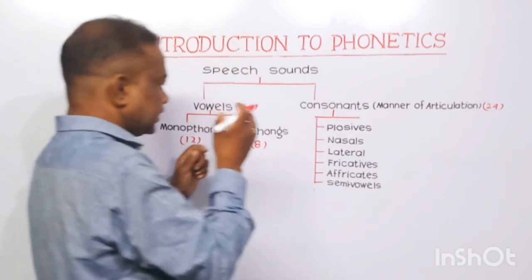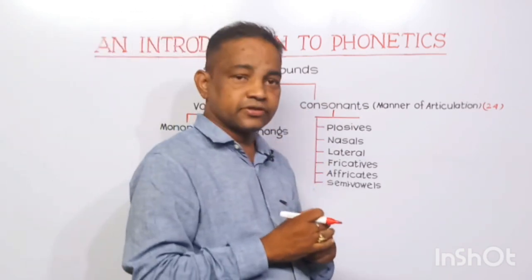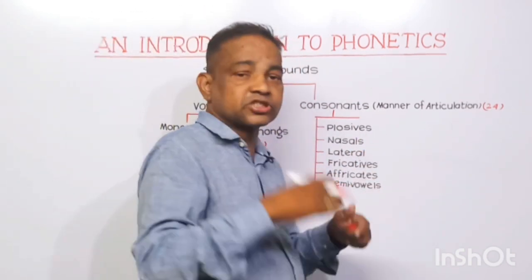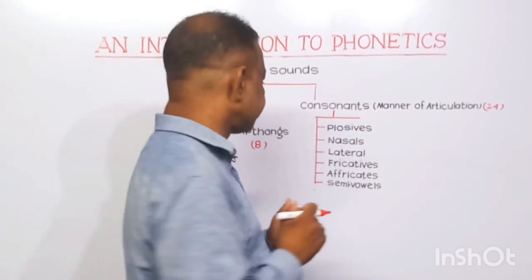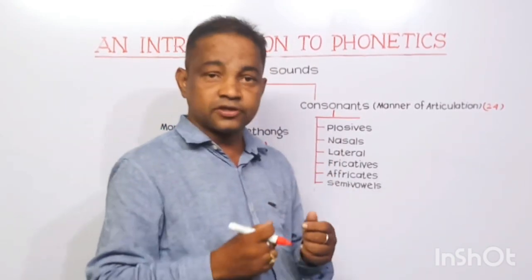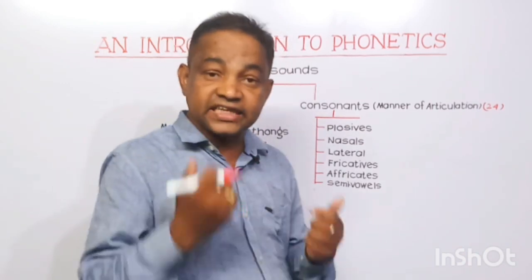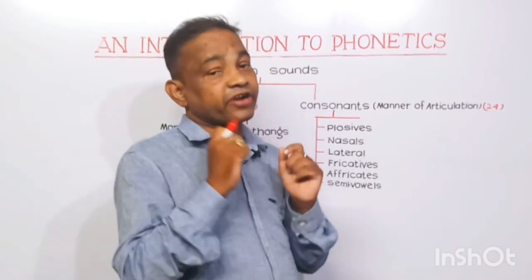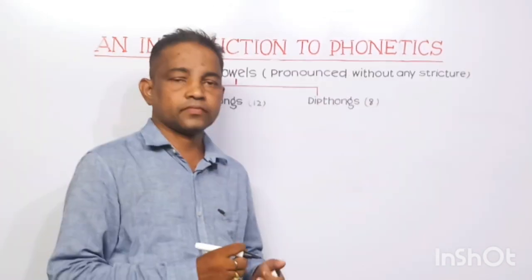Let us discuss consonants. There are six types of consonants: plosives, nasals, laterals, fricatives, affricates, and semivowels.